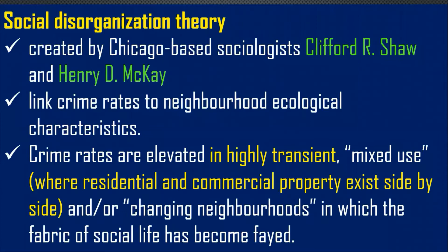The social disorganization theory, the first major theory under social structure theory, was created by Chicago-based sociologists Clifford Shaw and Henry D. McKay. They linked crime rates to neighborhood ecological characteristics. When we say ecological characteristics, we are talking about the interdependence of living things with their physical environment — this can be plant ecology, animal ecology, or human ecology.